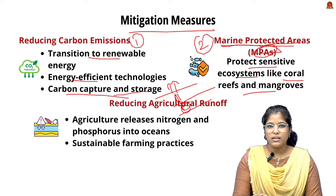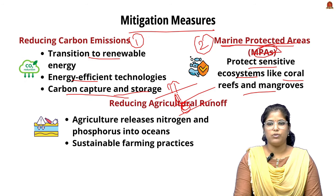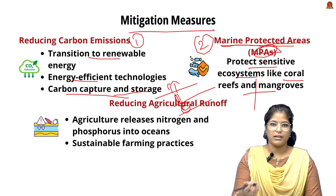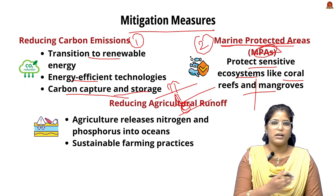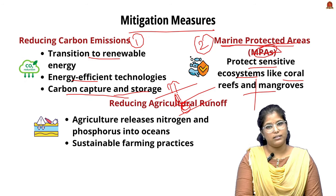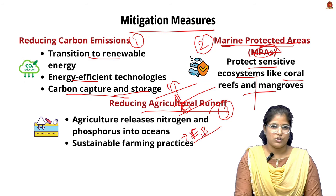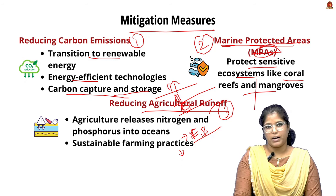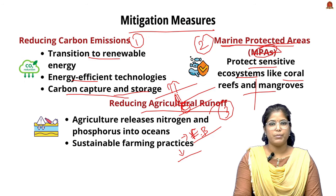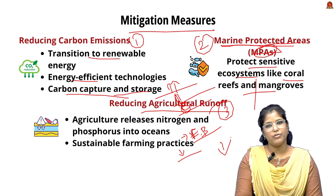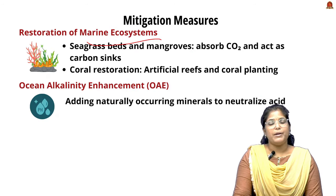MPAs help protect eco-sensitive areas like coral reefs and mangroves, and enable early identification of coral bleaching to contain the spread of disease to healthier corals. Third, we should reduce agricultural runoff by focusing on sustainable farming practices rather than fertilizer-based agriculture, preventing chemical runoff into the ocean.